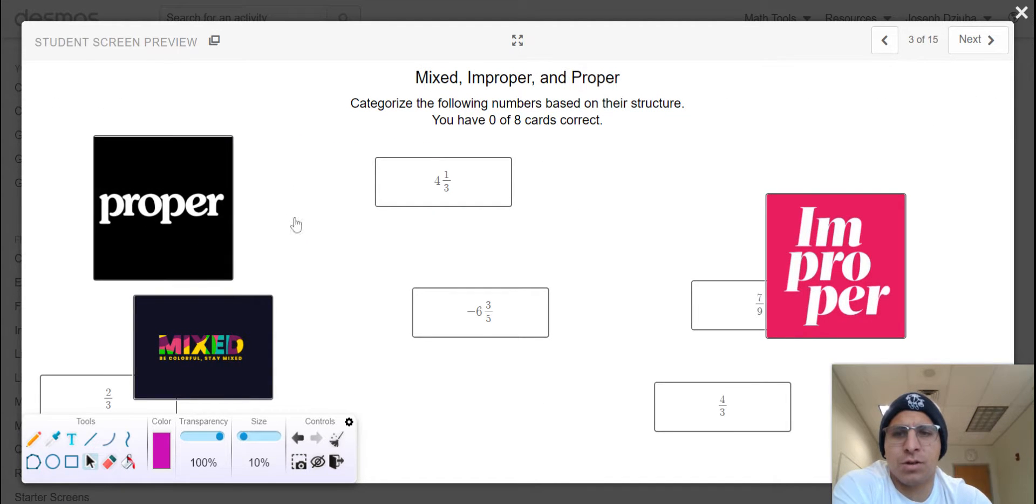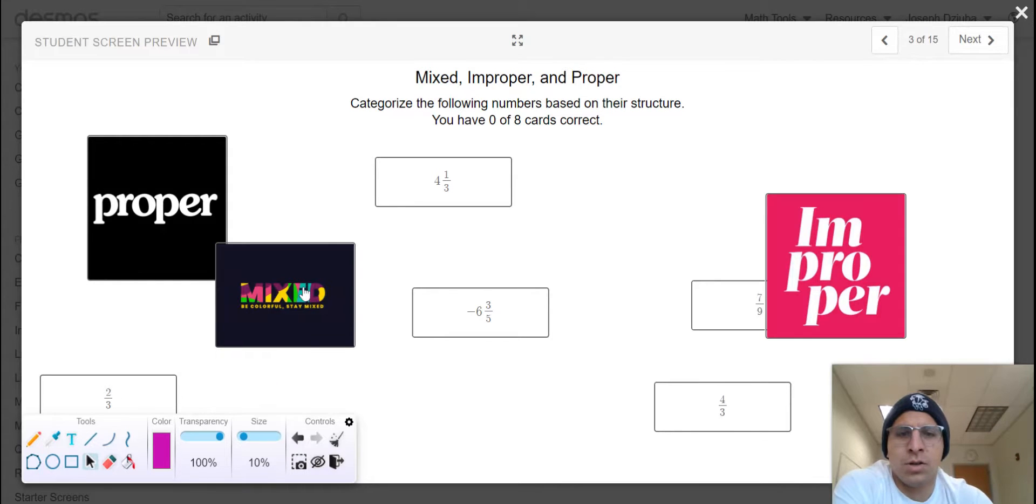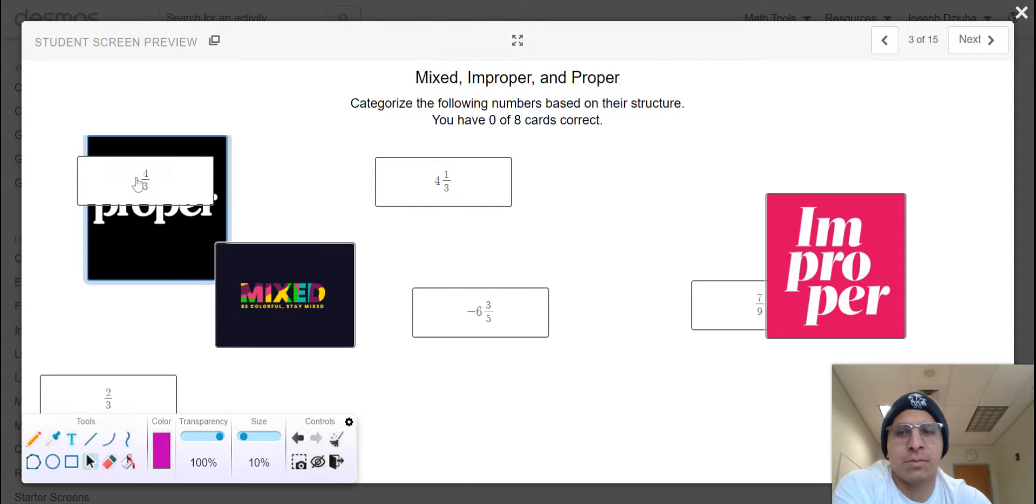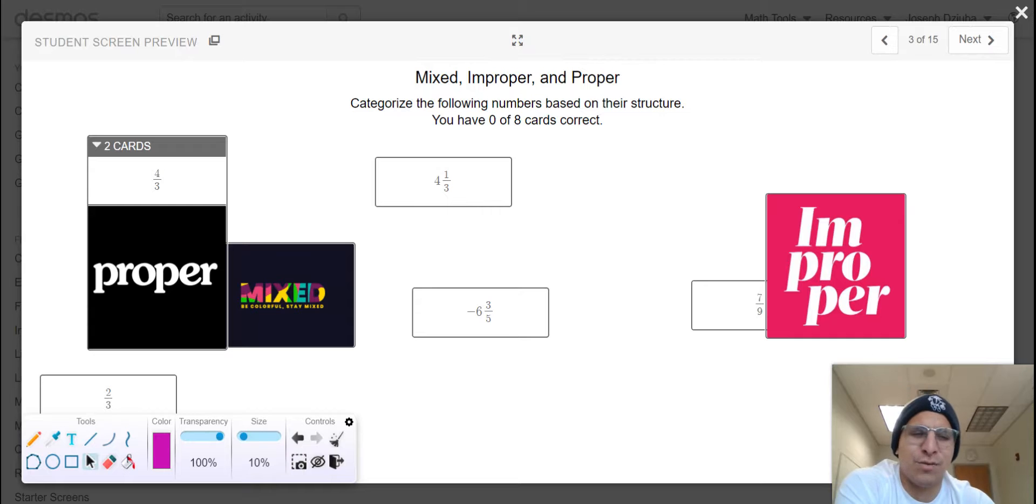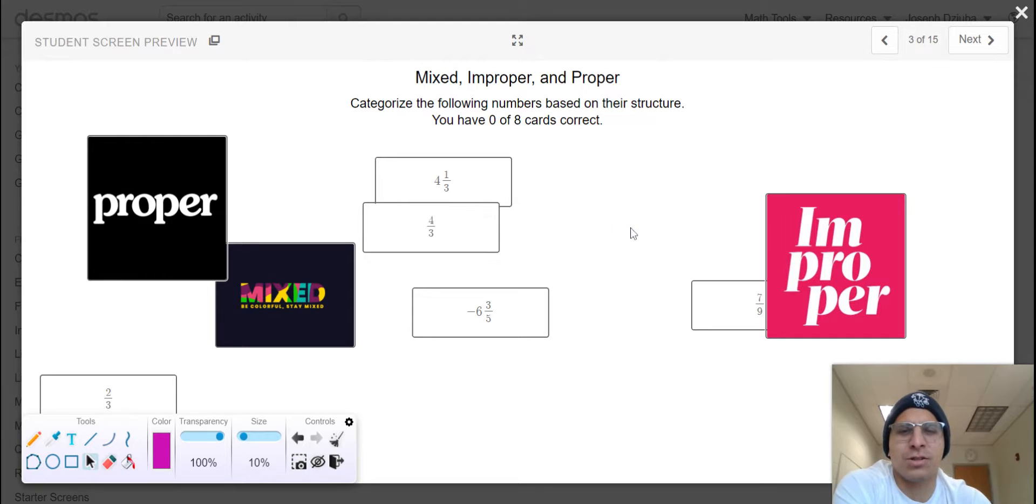As you can see we have a card sort mixed proper improper categories. The following numbers based on their structure, so if you think four thirds is a proper fraction make sure you drag it over, connect those two. Unfortunately it is not because I still have zero of eight cards correct but I'm sure and confident that you'll be able to get all eight.